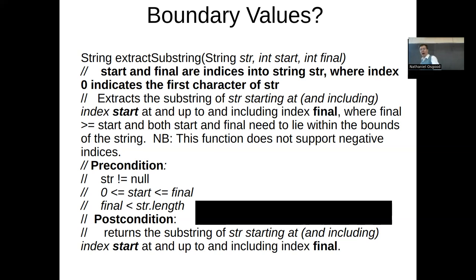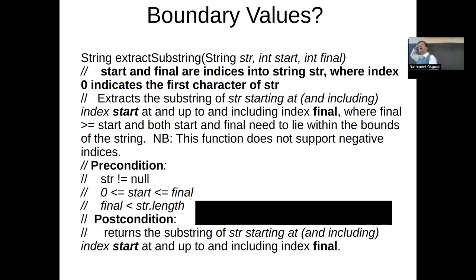Consider a function that extracts a substring: you specify a start index and a final index, both starting at zero, and the function extracts the characters from start up to and including final. What would be some boundary values for calling this function? Give some cases that would reasonably be regarded as boundary cases.